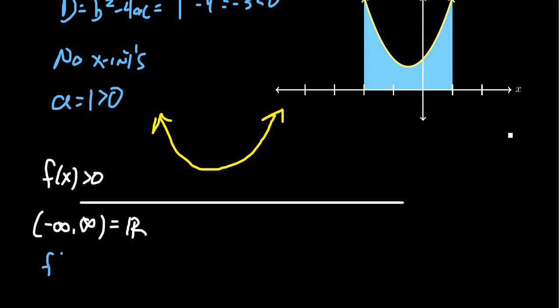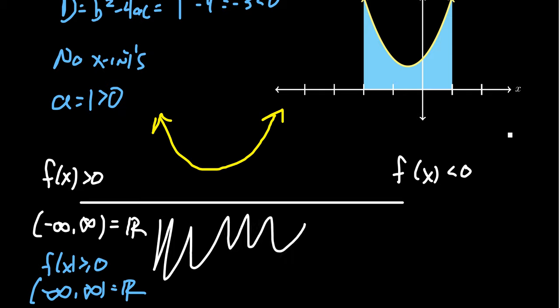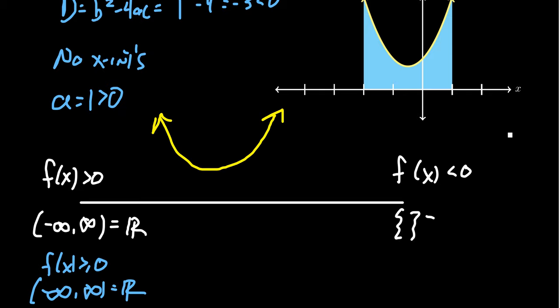On the other hand, when f of x is less than 0 — below the x-axis — there's no part of the graph that lives there, so we get the empty set. And switching to less than or equal to 0 is still the empty set because there are no x-intercepts to include. So the negative discriminant case is even weirder than the discriminant 0 case: when your discriminant is negative, your function is either entirely above or entirely below the x-axis, meaning your solutions are either all real numbers or no real numbers — just flip a coin, basically.